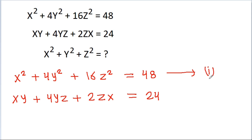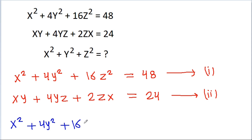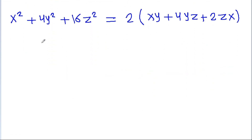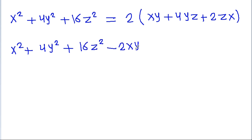Suppose this is equation 1 and this is equation 2. From equation 1 and equation 2, we can say that x² − 4y² − 16g² = 2(xy − 4yg − 2gx). Rearranging, we get x² + 4y² + 16g² − 2xy − 8yg − 4gx = 0.